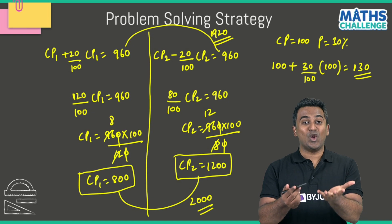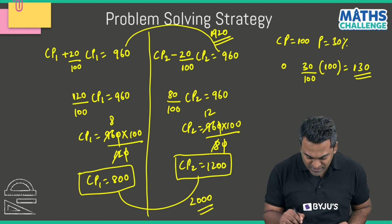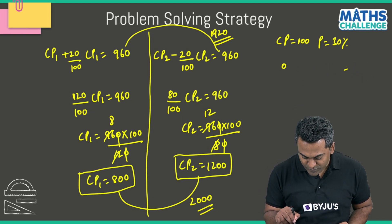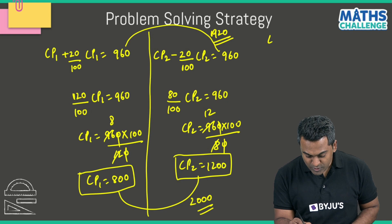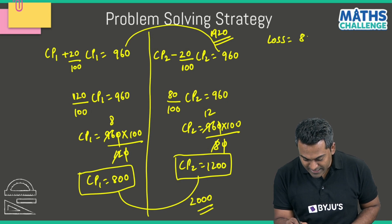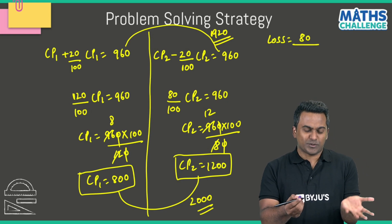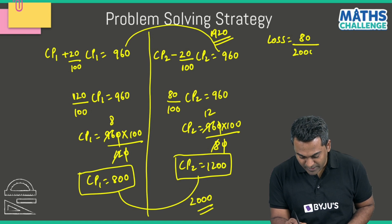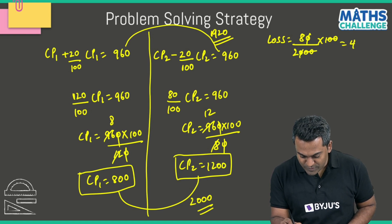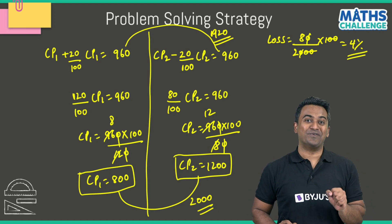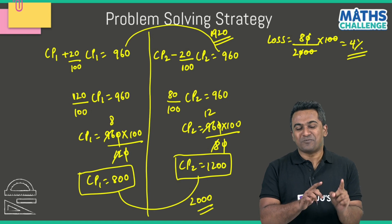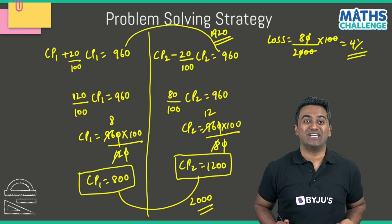With a total cost price of $2000 and a total selling price of $1920, we have actually made a loss. The loss is 2000 − 1920 = $80. Loss percentage = 80 / 2000 × 100 = 4%. So we've actually made an overall loss of 4%, which is why this problem is slightly on the trickier side.